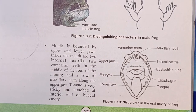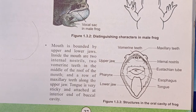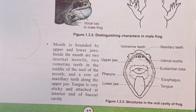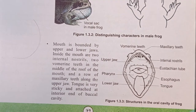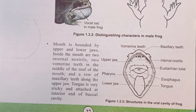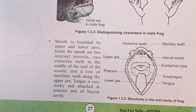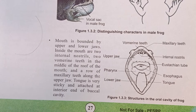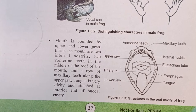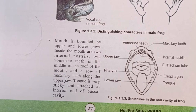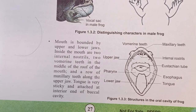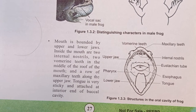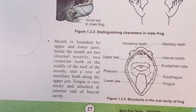Inside the mouth are two internal nostrils, two vomerine teeth in the middle of the roof of the mouth, and a row of maxillary teeth along the upper jaw. The tongue is very sticky and attached at the anterior end of the oral cavity.